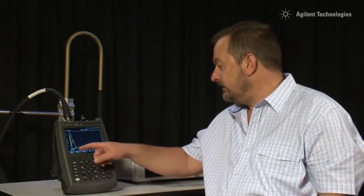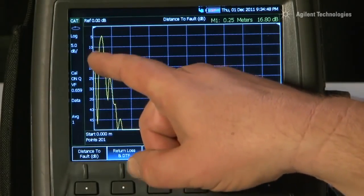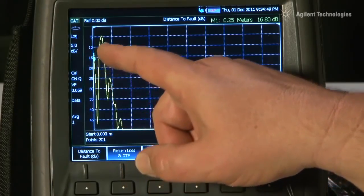So you can see on the Distance to Fault screen here, that marker 1, which was at the 1.5m distance away from here, which was the end of our fly lead, is now at 0m. And if we move the marker to the right,